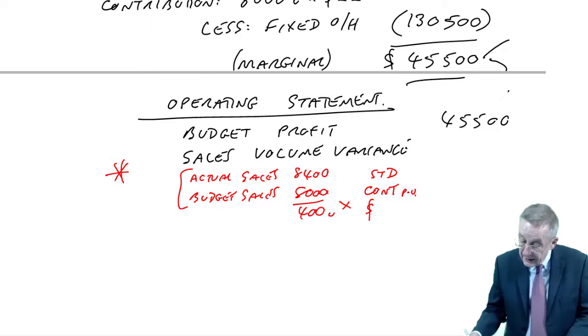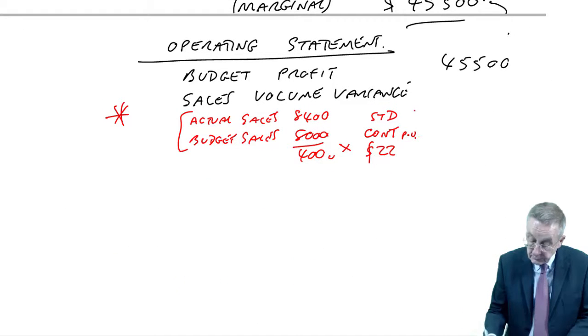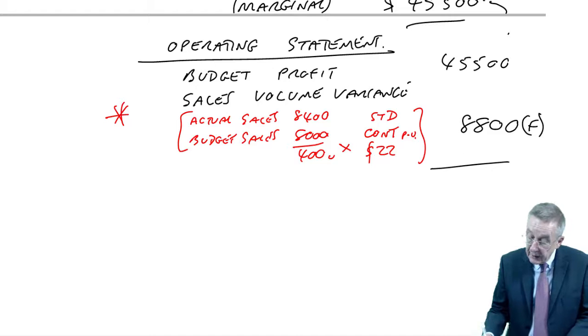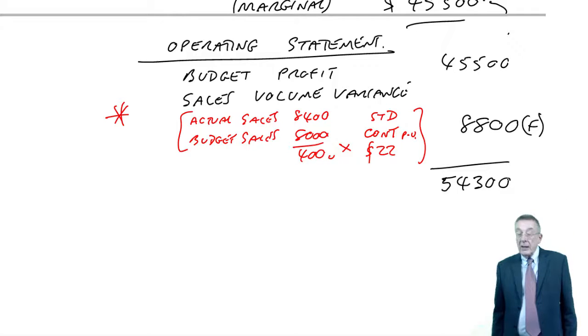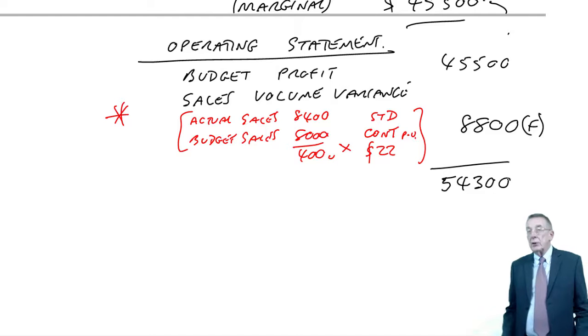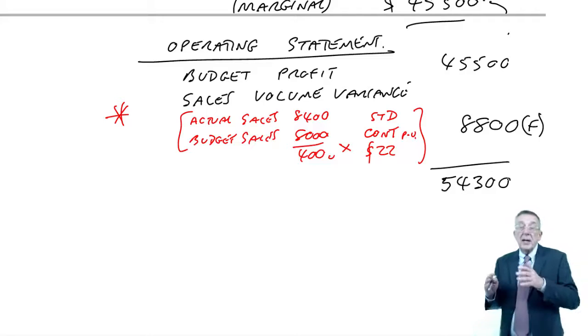Which, what was it? Added a minute ago. $22. It's favourable because there are more units. That gives us, so far, 54,300. We're now expecting 54,300. So, I think that's an easy one to remember. Sales volume, if it's absorption, cost at standard profit per unit. If it's marginal, at standard contribution.